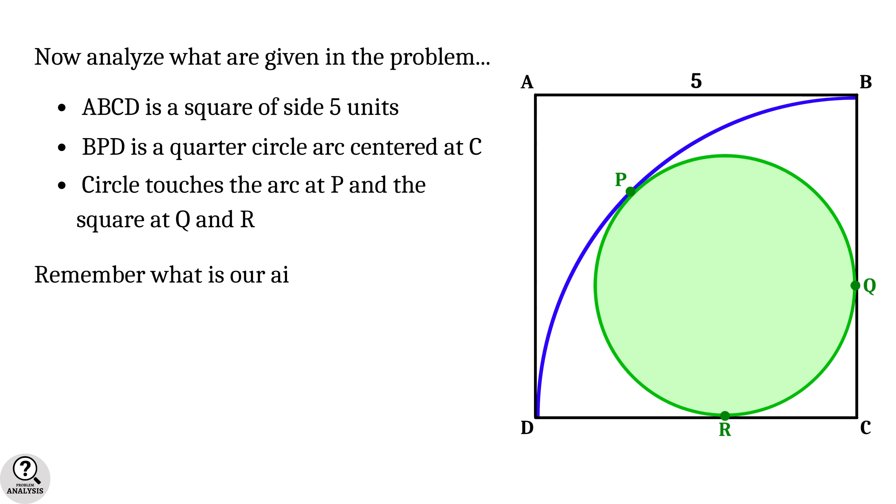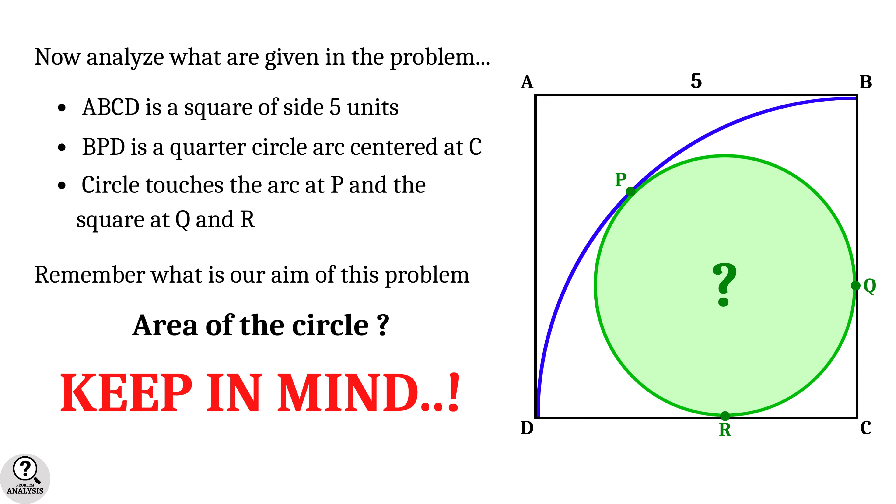Now, remember what is our aim of this problem. It is to find the area of the circle. This is the structure of our problem. So, always keep in mind. Before moving to the solution, we have to note two important properties required in this solution.